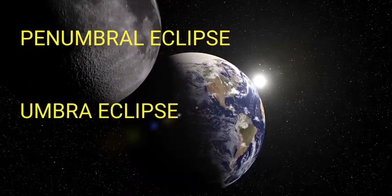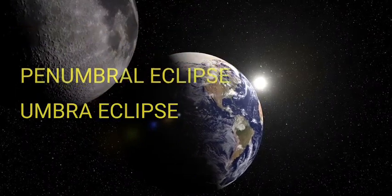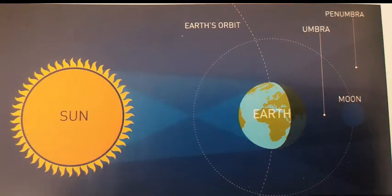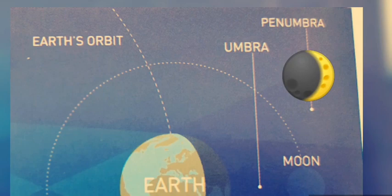There are two types of lunar eclipse. A penumbral eclipse and an umbral eclipse. A penumbral eclipse occurs when the Moon passes through Earth's penumbra. An umbral eclipse occurs when the Moon passes through the Earth's umbra.